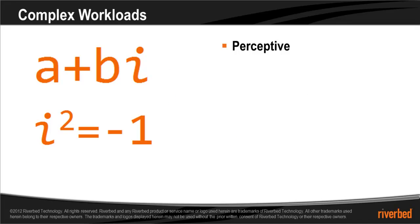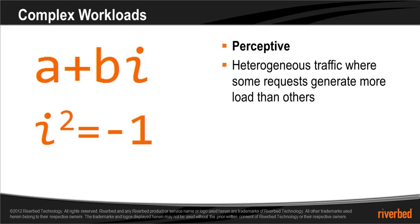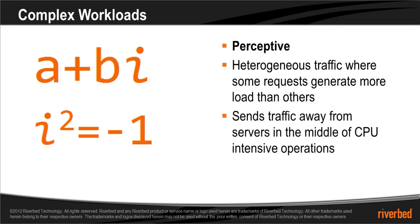For a more complex workload where some requests generate more load than others, it's recommended to use the perceptive algorithm. It will send traffic away from servers that are in the middle of CPU-intensive operations by factoring in response time. Servers in the middle of CPU-intensive operations will begin to respond slower, triggering the perceptive algorithm to direct traffic away from those servers.